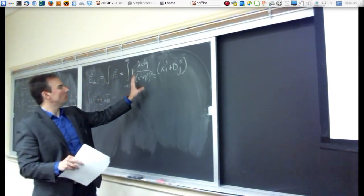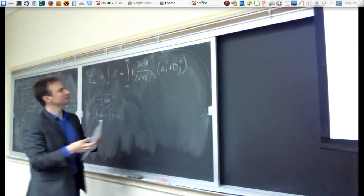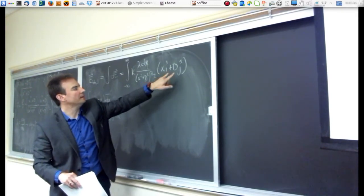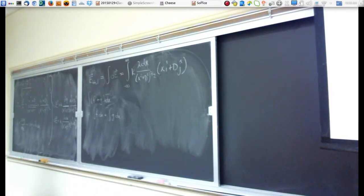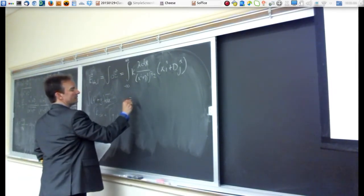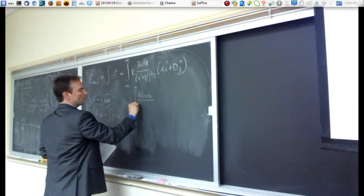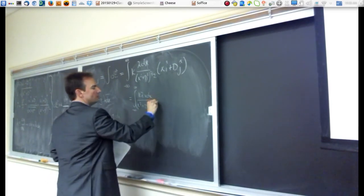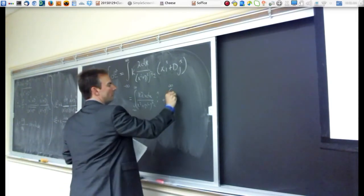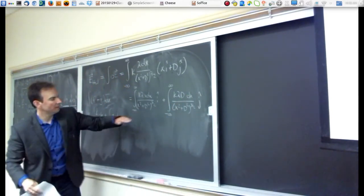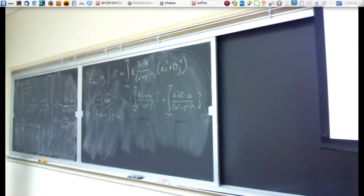For the x-component integral, I plugged it into Wolfram Alpha — the integral from negative infinity to positive infinity of x over x squared plus d squared to the three-halves, dx. What did I get? Zero. We expected it to be zero, so that's a nice check. It turns out this definite integral does give zero.